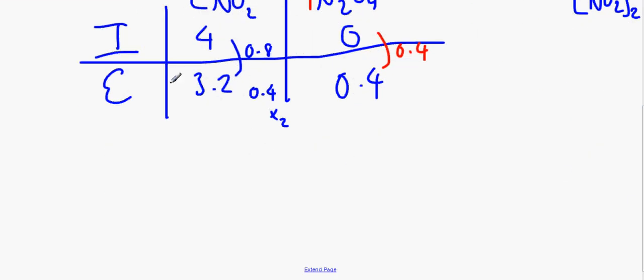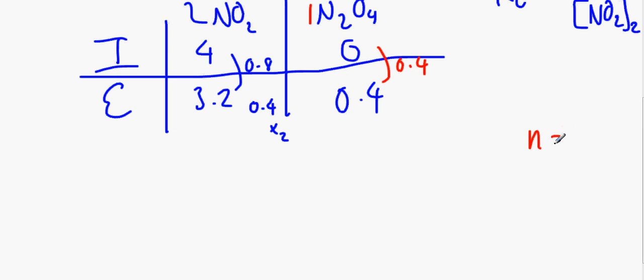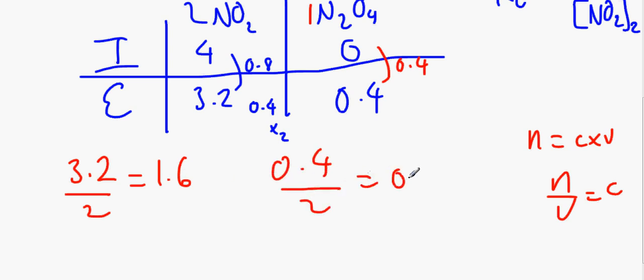So now what we've got to do to change this into the concentration, we divide it by volume. Remember n equals C times V. So if we rearrange it, it will be n over V equals C. So 3.2 divided by 2 equals 1.6. 0.4 divided by 2 equals 0.2.